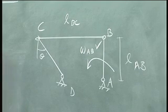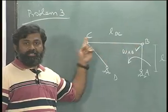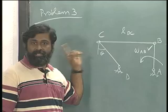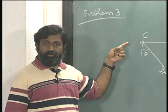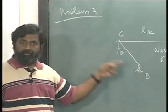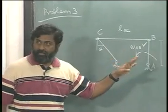Now remember angular velocity of LBC is related to velocity of B and velocity of C. Angular velocity of CD is related to, since the velocity of D is zero, it is related to C. Let's look at it from that point of view.